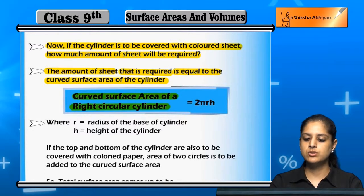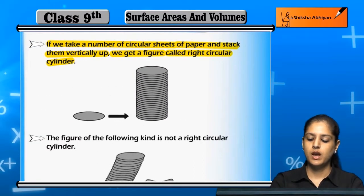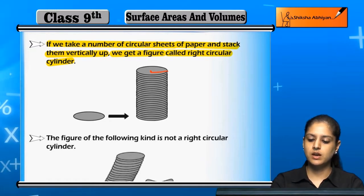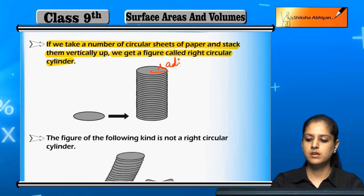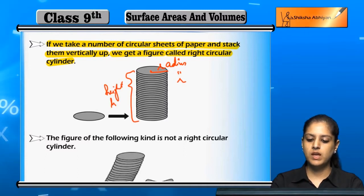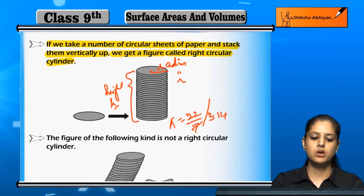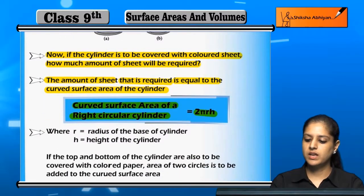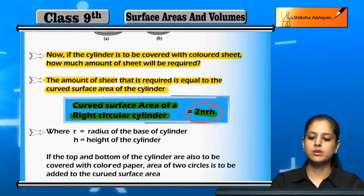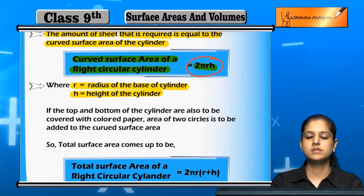The formula for the curved surface area of the right circular cylinder is 2πrh. Here, R is the radius of the base of the cylinder, H is the height of the cylinder, and the value of π is equal to 22/7 or 3.14 according to the question. So the curved surface area is 2 × π × R × H.